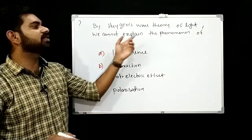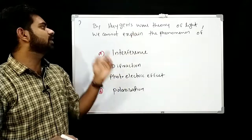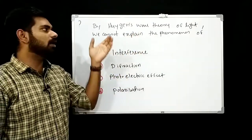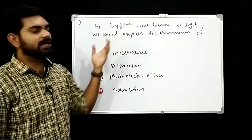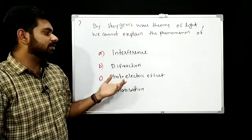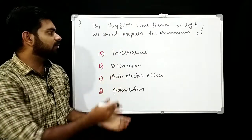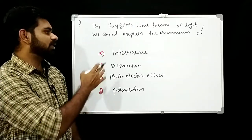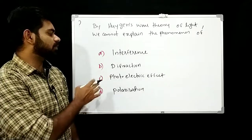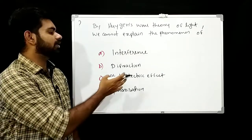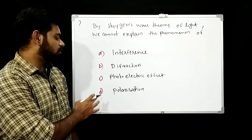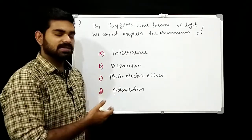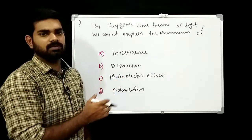By Huygens' wave theory of light, we cannot explain the phenomenon of — option A: interference, option B: diffraction, option C: photoelectric effect, option D: polarization. Huygens' theory explains the wave nature of light — interference, diffraction, and polarization — but cannot explain the photoelectric effect, which requires the particle (photon) nature of light.